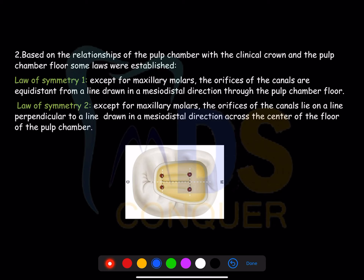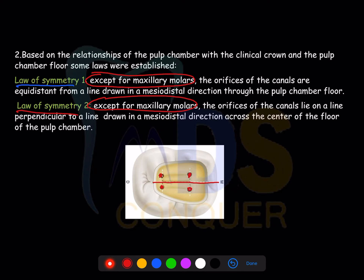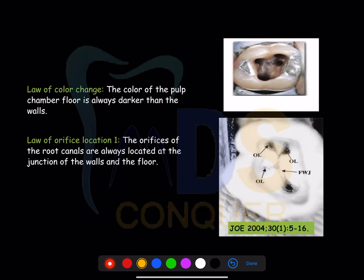The Law of Symmetry One states that except for maxillary molars, the root canal orifices are equidistant from a line drawn in the mesiodistal direction through the pulpal floor. The Law of Symmetry Two states that except for maxillary molars, the orifices of the canals lie on a line perpendicular — that is at 90 degrees — to the first line.